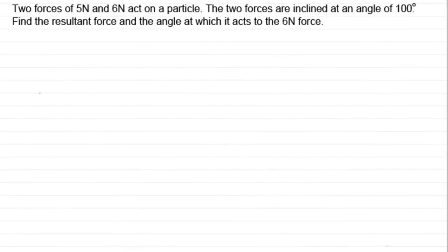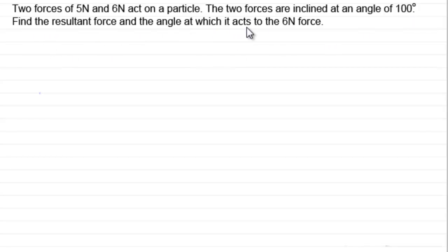Hi, if you watch my earlier tutorial on resultant forces, this example here is a follow up to it which you might like to try. What we've got is two forces of 5 newtons and 6 newtons act on a particle. The two forces are inclined at an angle of 100 degrees. Find the resultant force and the angle at which it acts to the 6 newton force. Pause the video and come back to check your solution.